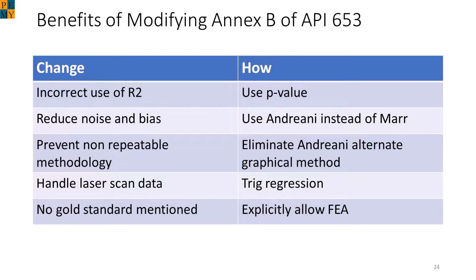To summarize the proposal, we first want to correct fundamental errors with what is in API 653, which are the incorrect use of the R-squared and the use of the Andriani graphical method. Second, we believe that Marr has too many problems caused by bias and noise, and that the Andriani method is just as simple but better and should be applied as a basic approach to the analysis. Finally, if there is dense data, we would like to be able to use the data efficiently to establish if the curvature at the bottom of the tank perimeter is acceptable.